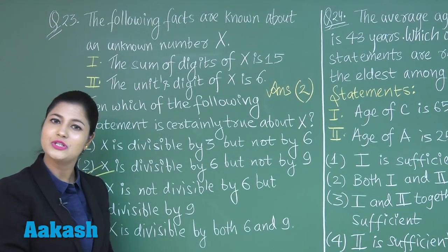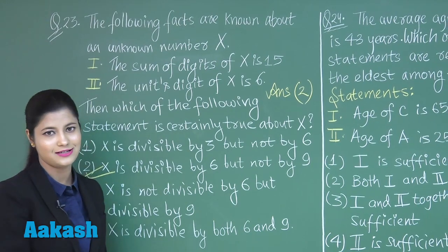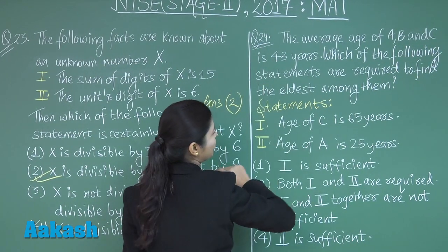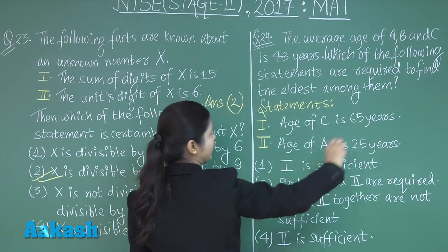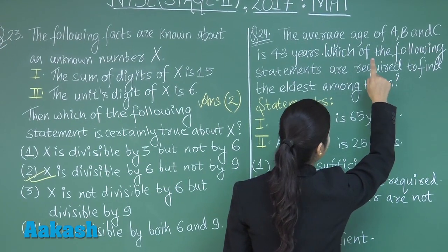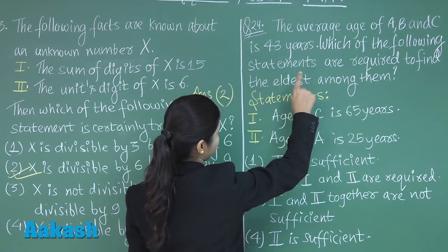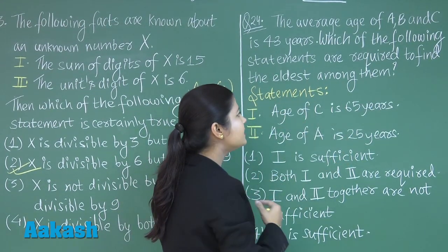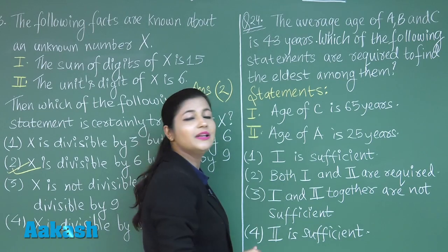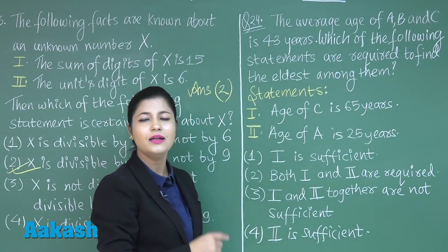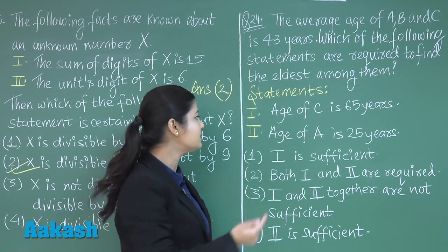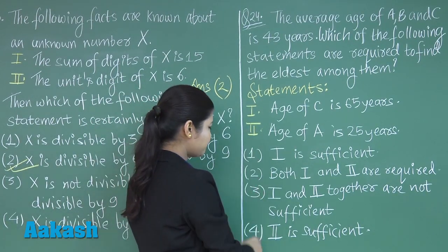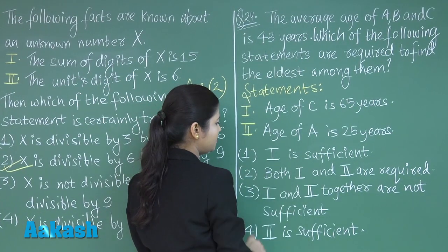I hope this question is clear to you. Now let us discuss question number 24. It states that the average age of A, B and C is 43 years. Which of the following statements are required to find the eldest among them? The statements given are: statement 1 — the age of C is 65 years; statement 2 — the age of A is 25 years.